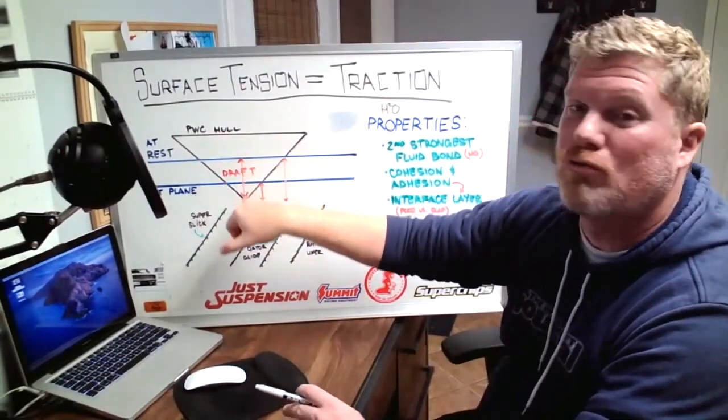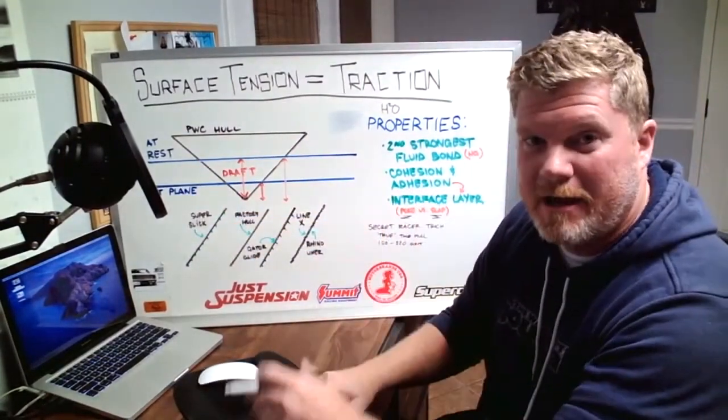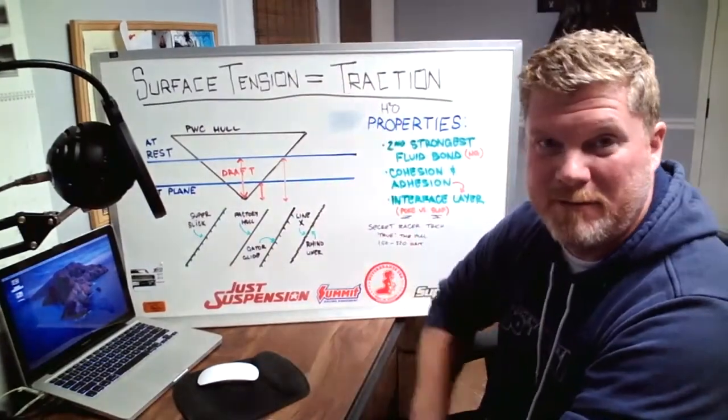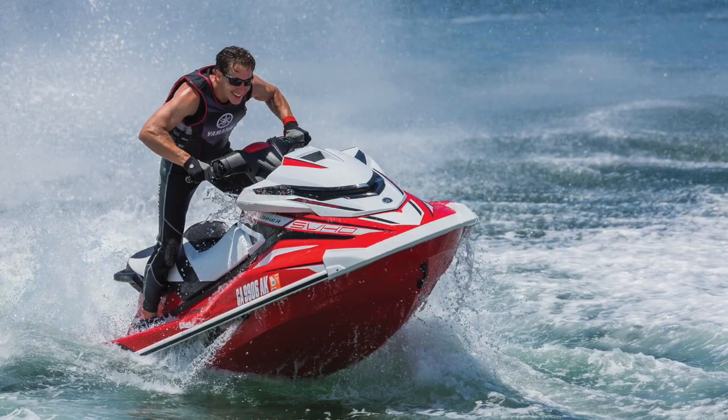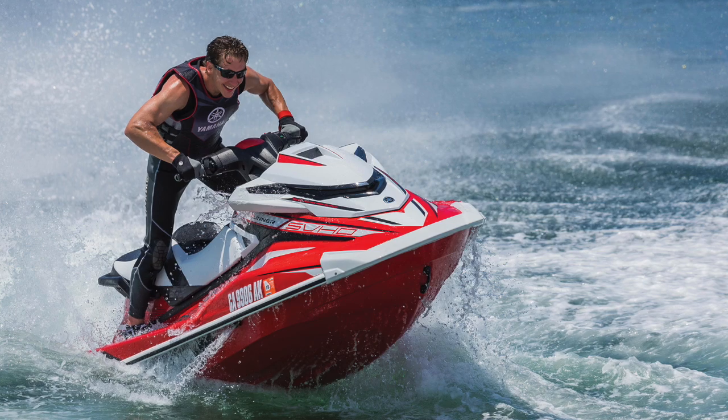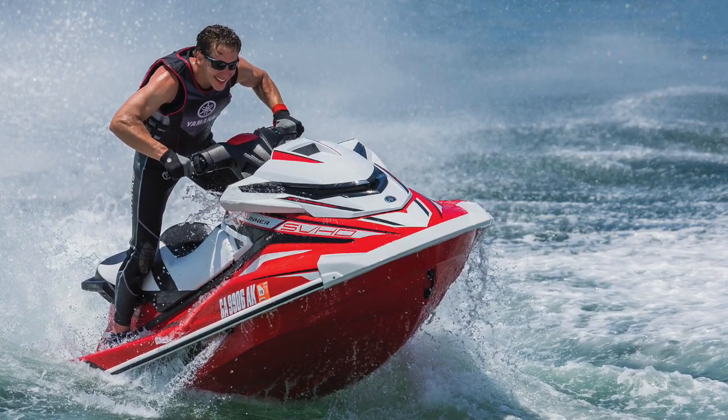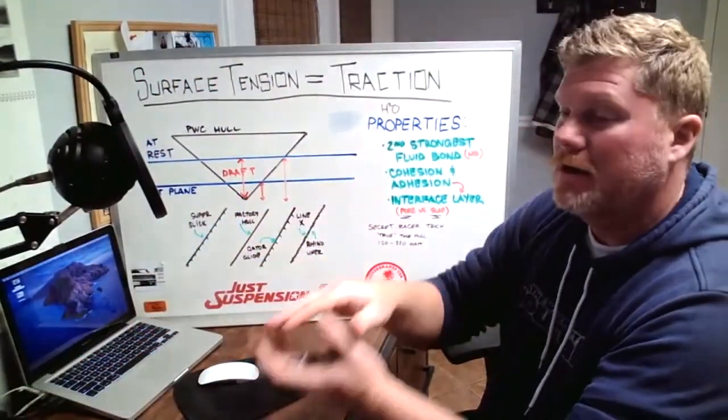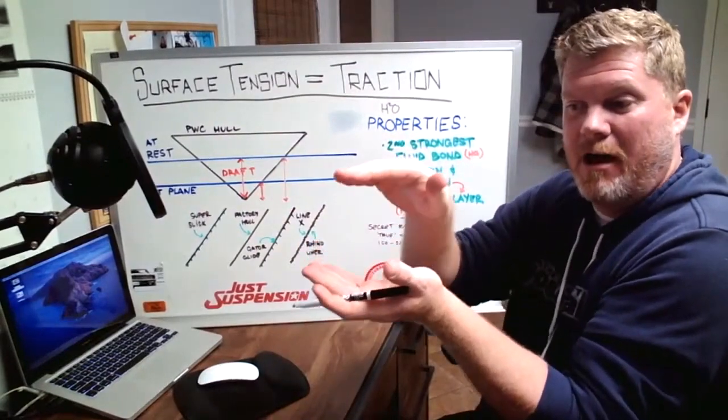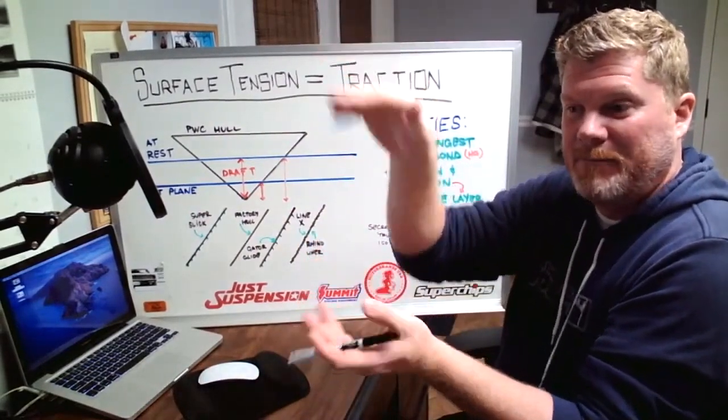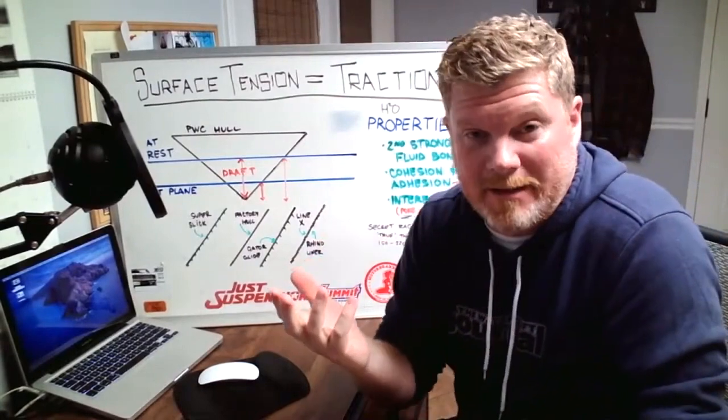So let's say you get on the throttle and start kicking it up to 45, 50 miles an hour. You're bringing the ski up to plane, that's your planing speed. Well, at plane, the hull is going to rise out of the water.